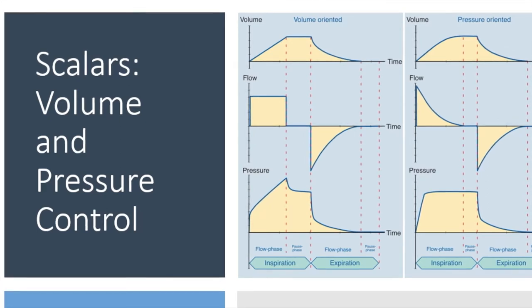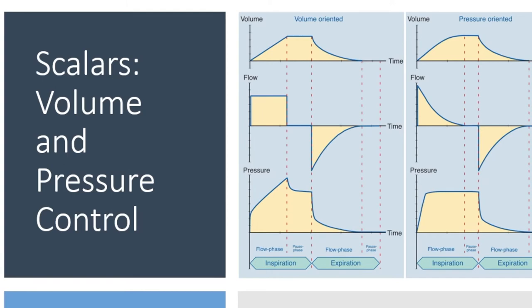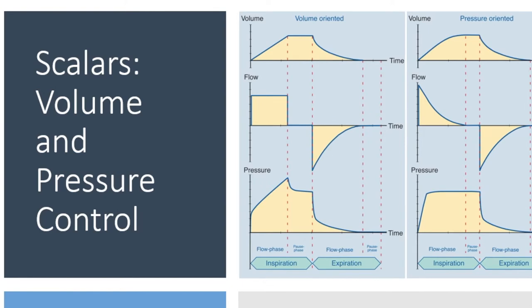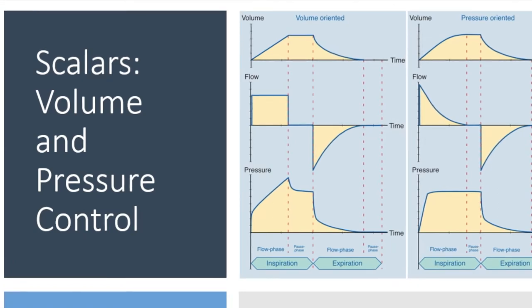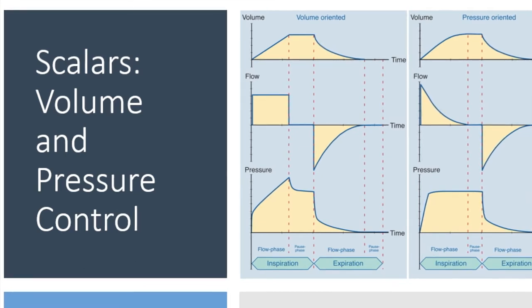The volume scalar is not as informative as the other two, but worth a quick look. On a volume-style breath, the continuous flow going in means volume increases, then at plateau pressure — where there's no flow — the volume plateaus, and then drops with expiration. On the decelerating flow breath, volume gradually increases even as flow decelerates, but the rate at which it increases drops off and flattens, then there's a period of no flow — no increase in volume — before cycling into expiration.